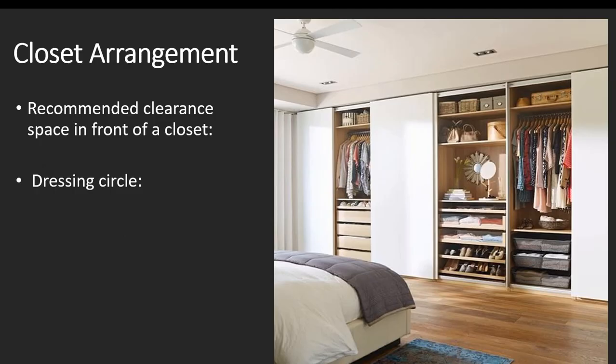When thinking about placement near your closet, you want enough space to open doors, walk in front, and get dressed. You want at least 33 inches of space in front of your closet to walk and get dressed. The diameter you need to get dressed comfortably is 42 inches.